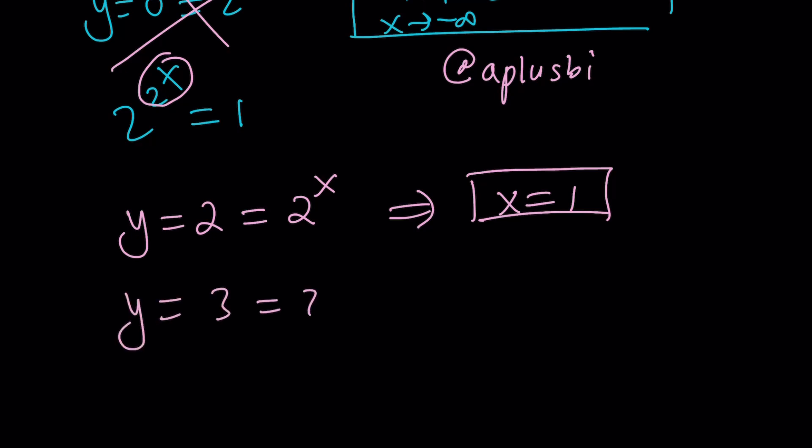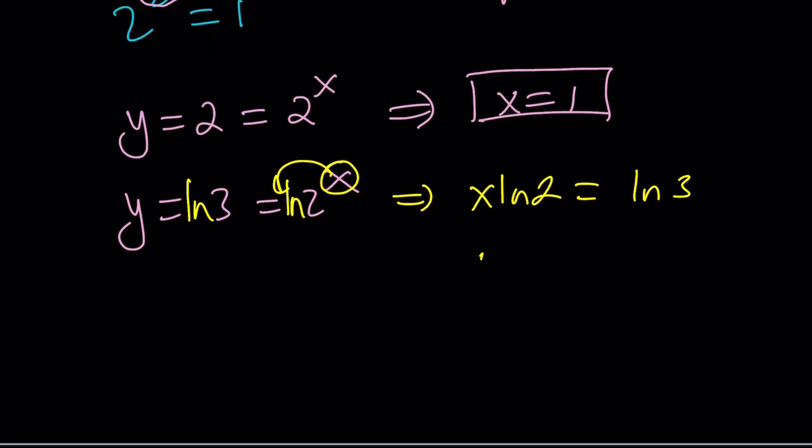Y equals 3 equals 2^x. Okay. What am I going to do with this? ln both sides because, why not? ln and ln bring the x to the front and you get x ln 2 equals ln 3. By division, you get x equals ln 3 over ln 2. Later on, we're going to write this a little differently. You'll see it. Just bear with me, okay?